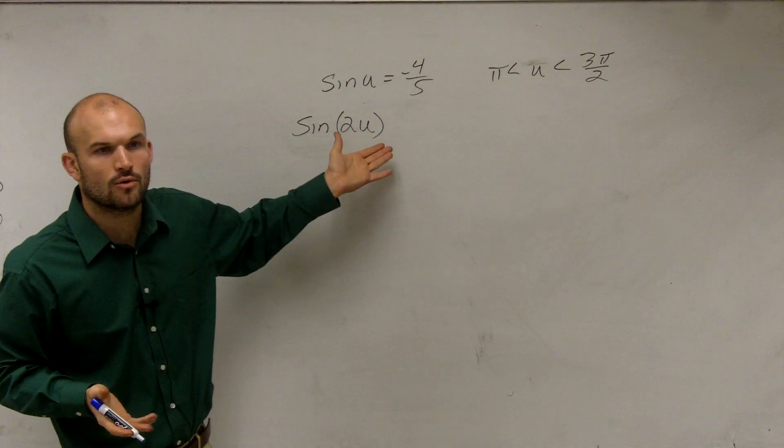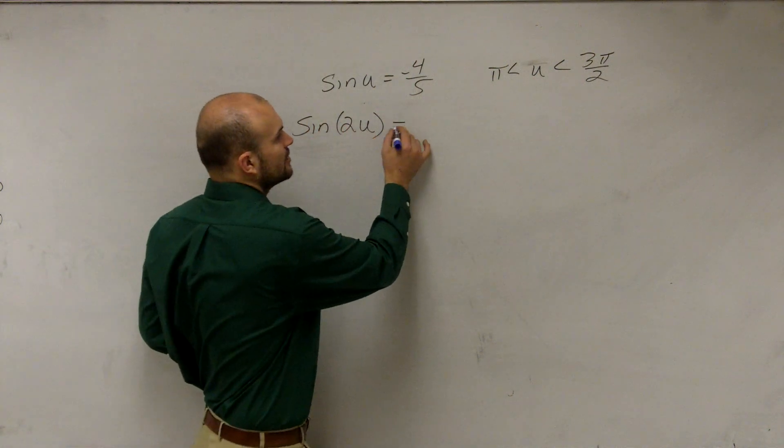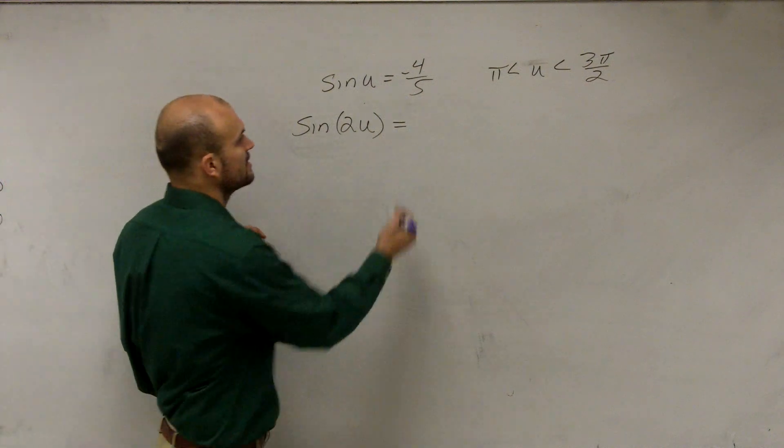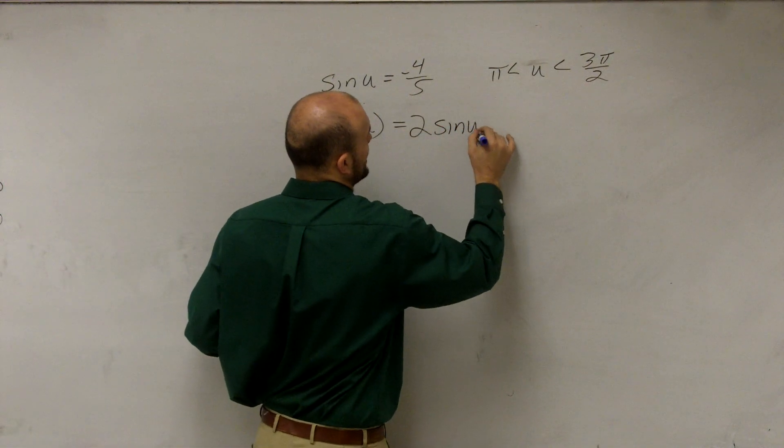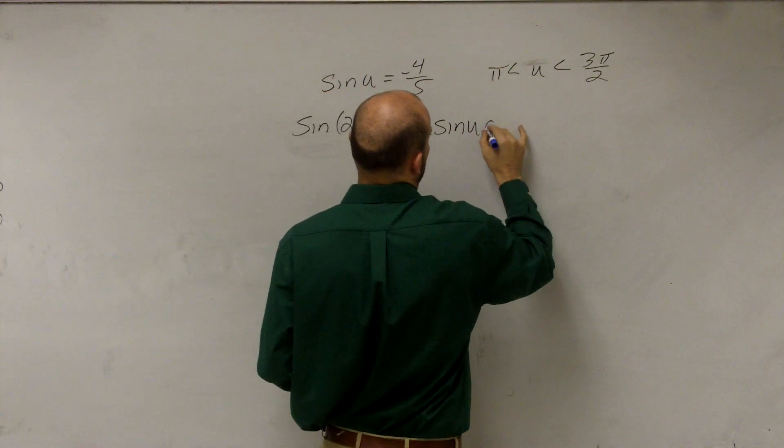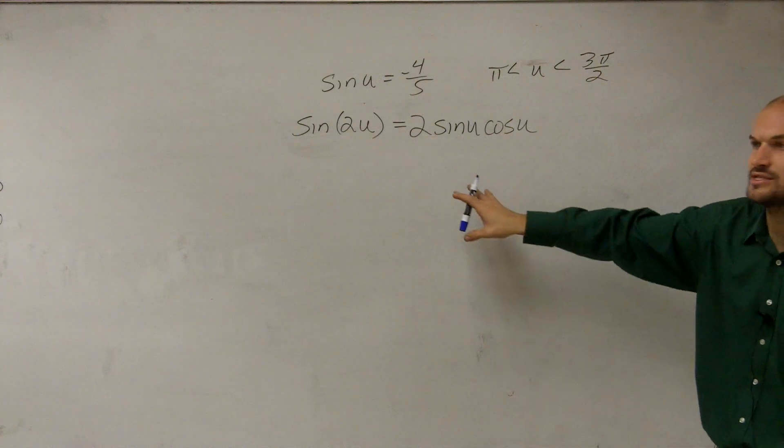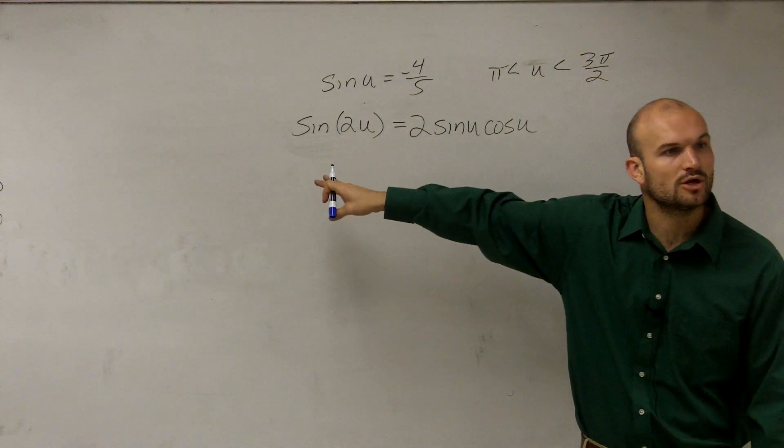So first of all, we need to know what the sine of 2u represents. Well, the formula for the sine of 2u, which is on page 287 with the new formulas, is going to be 2 times sine of u times cosine of u. So that's a new formula you'll be provided with. But this is what you need to apply when you have a multiple angle.